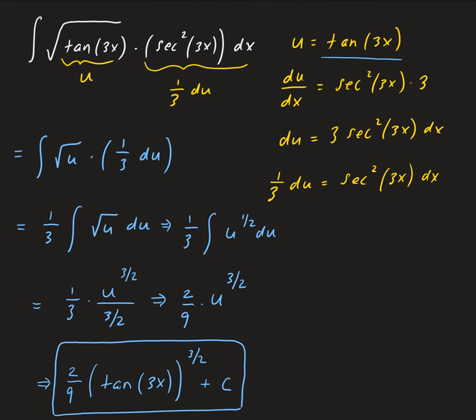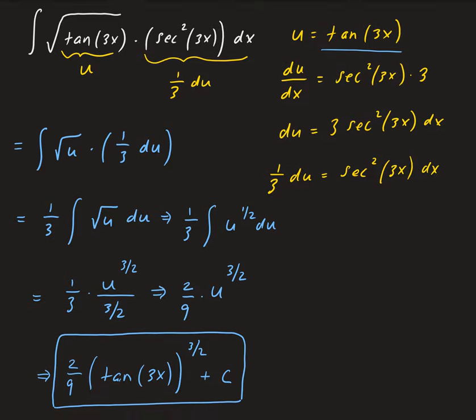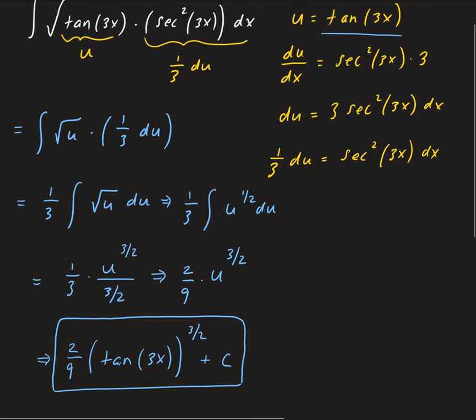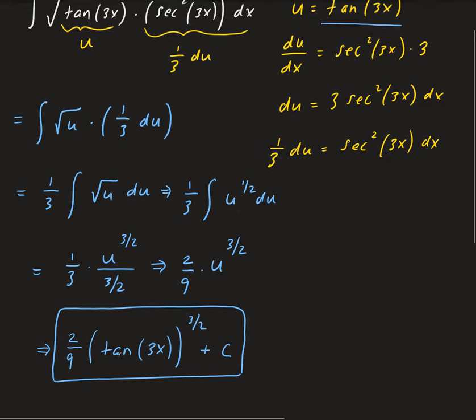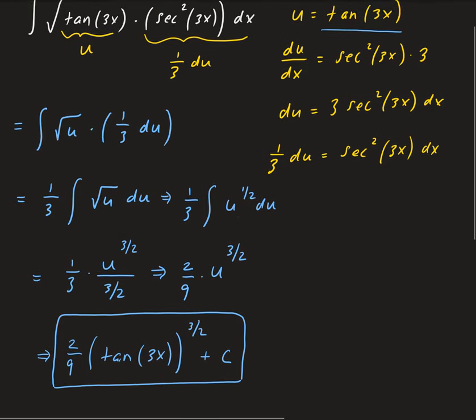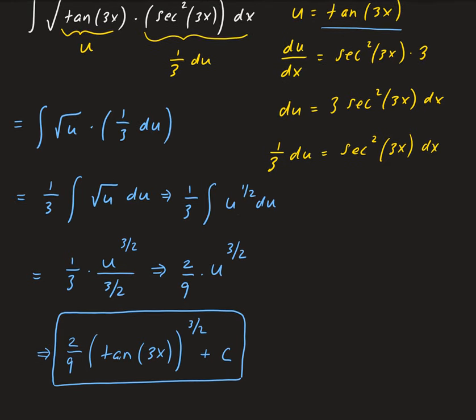In this case, we let u be whatever is under the radical — the tangent of 3x that was underneath the square root. We took the derivative of that, which allowed us to convert the rest of the function in terms of u. Then we applied the power rule for integration and converted the result back into x.